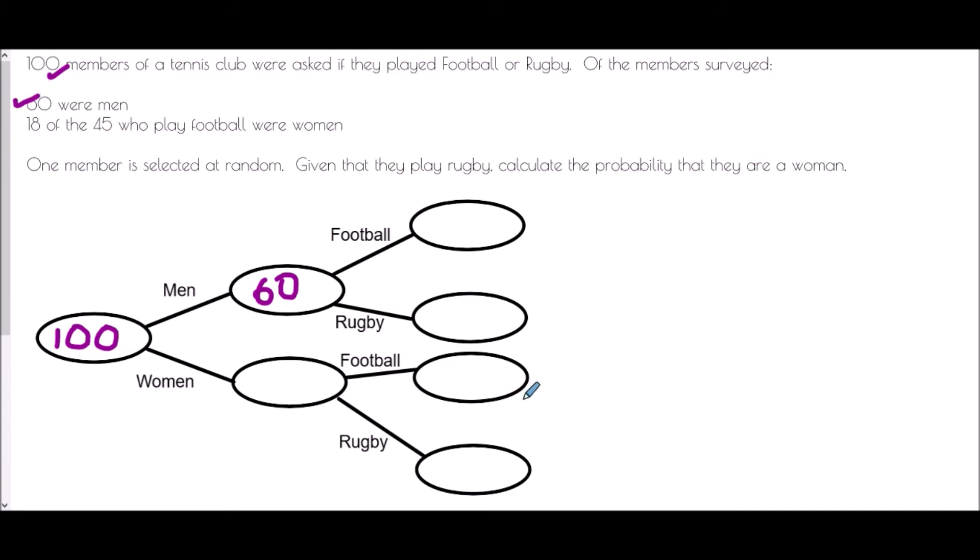And then it says 18 of the 45 who play football were women. So the first thing that I take here is the 18. They are women who play football. So out of the women, 18 play football. And that's the first piece of information. But the second part of it is also important. There are 45 who play football. And so if 18 of them were women, the remainder must have been men. And so 45 take away 18 is 27. And so there are 27 men who play football.